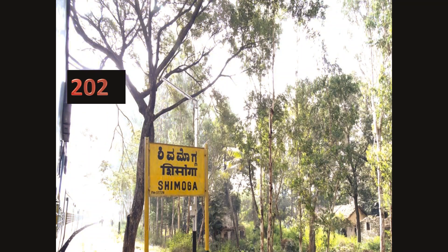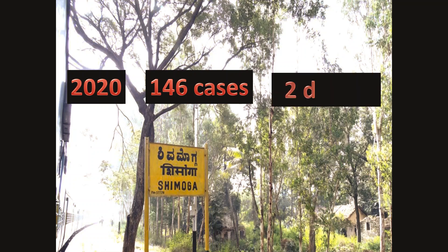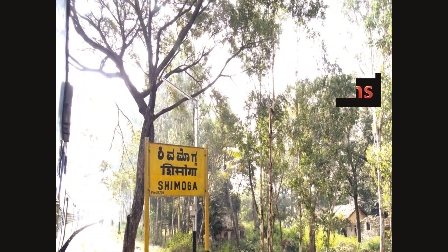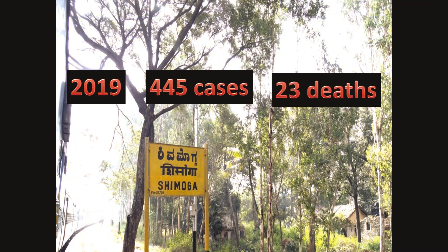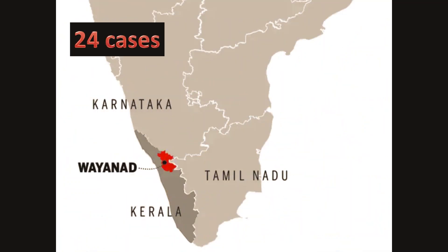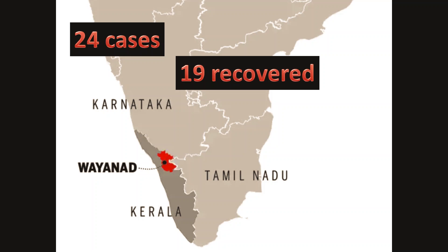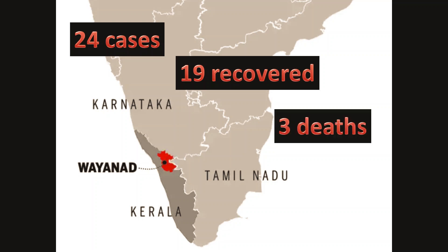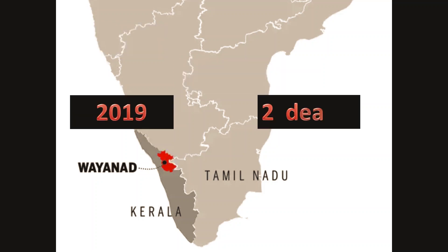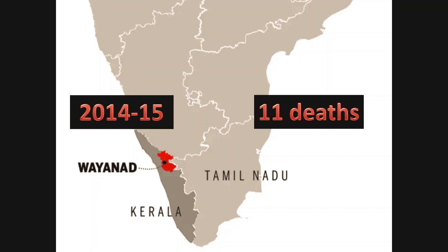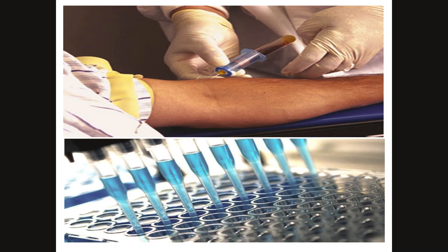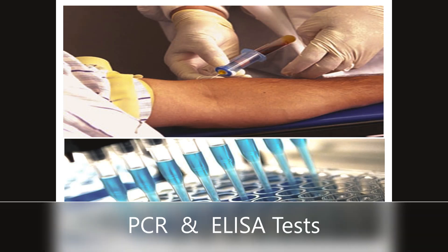This year, 146 cases were reported in Shivamogga including two deaths; last year it was 445 cases and 23 deaths. In Kerala this year, 24 cases have been reported — 19 recovered and three died in Wayanad district. Last year two people died of the disease; in 2014–15, 11 people died of the same. Doctors may recommend blood work to determine the Monkey Fever virus, which includes ELISA and PCR tests.